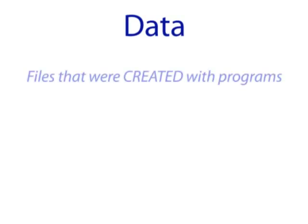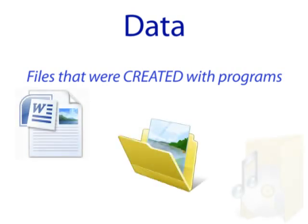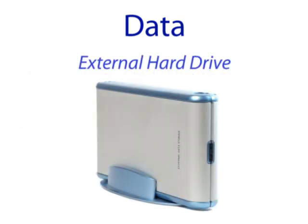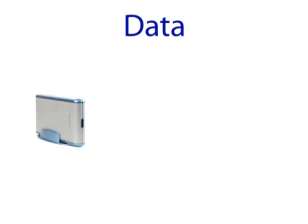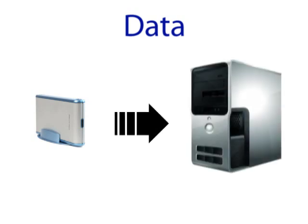Data: Your data files — meaning those files that were created with programs such as Microsoft Word documents, photos, and music — can most likely be transferred without a problem. The easiest way to transfer them is to use an external hard drive. An external hard drive works just like the hard drive inside your computer, except it is very portable, so it allows your data to be easily copied to the new computer. This is the fastest way to transfer your data files to a new computer.